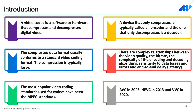A video codec is essentially software or hardware that does compression and decompression. The one that does compression is the encoder, and the one that decompresses is the decoder. Typically, any compressed data needs to follow a particular encoding standard, and these are normally lossy. Some of the most commonly used compression standards are the MPEG ones, like AVC, HEVC, and VVC. Whenever a standard is established, the complex relationship between visual quality, bitrate, compression efficiency, and algorithmic complexity are all well considered.